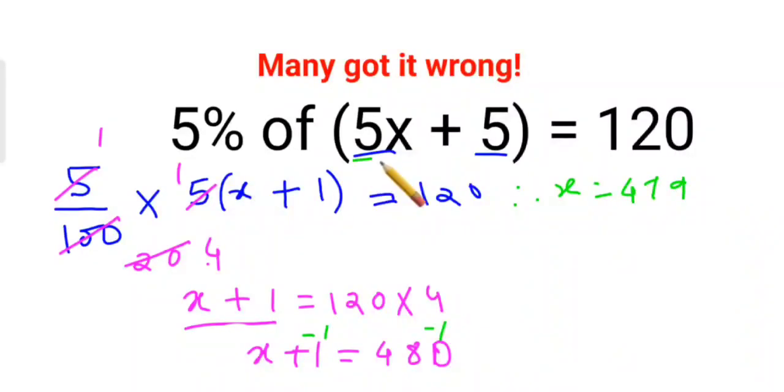Okay. Now let's put it back over here. So we have 5%, so again 5 upon 100, of means multiplication, 5 into x which is 479, which comes out to be 2395 plus 5. Okay.